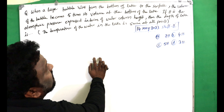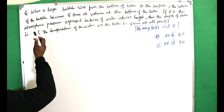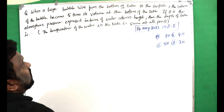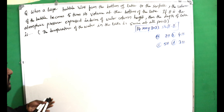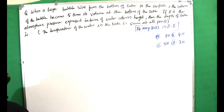The next question: when a large bubble rises from the bottom of a lake to the surface, the volume of the bubble becomes five times its volume at the bottom of the lake. If H is the atmospheric pressure expressed in terms of water column height, then the depth of the lake is to be found.